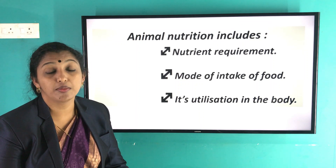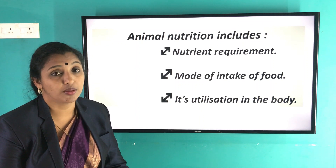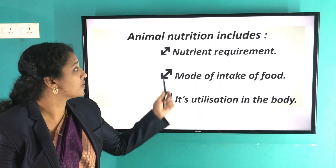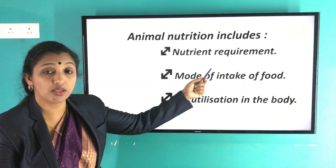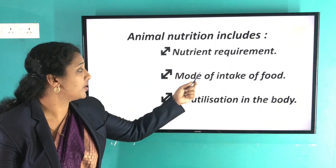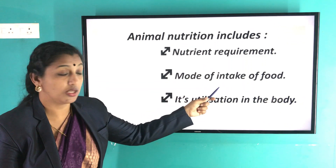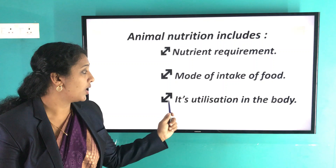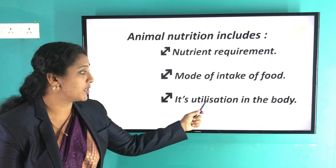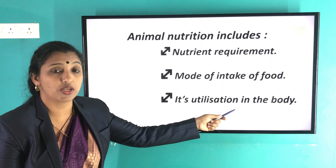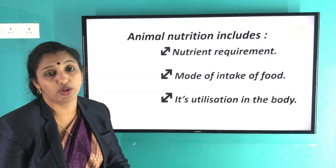Animal nutrition has three important points. First is the nutrient requirement. Second is the mode of intake of food. Third is its utilization in the body.